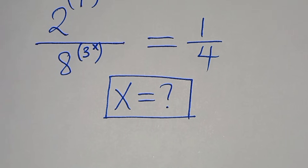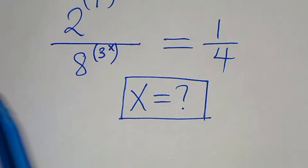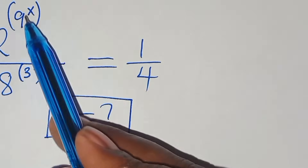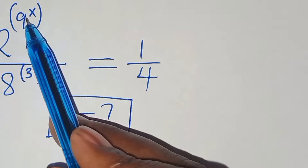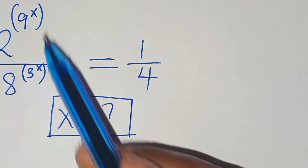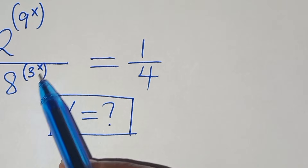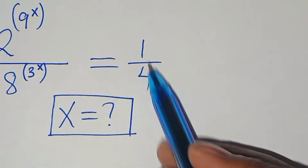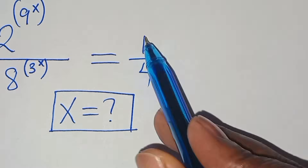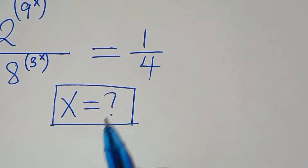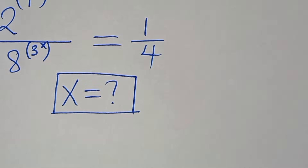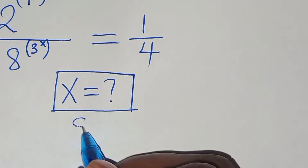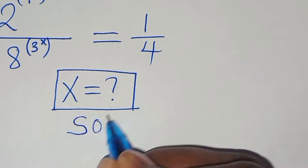Welcome. We're going to solve this math problem: 2 to the power of 9 to the power of x, divided by 8 to the power of 3 raised to the power of x, equals 1 over 4. What are the values of x? Let's provide a solution.